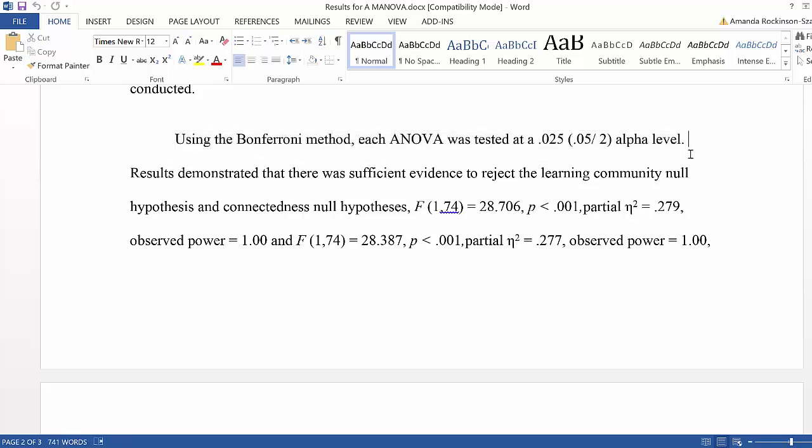rather than the .05, and I may even discuss why that was. I don't here, but I could just simply make a statement that that was to control for family-wise error.